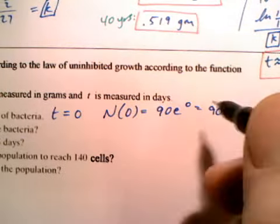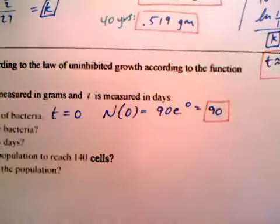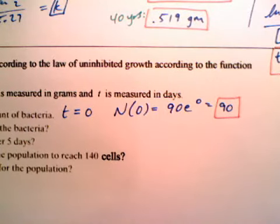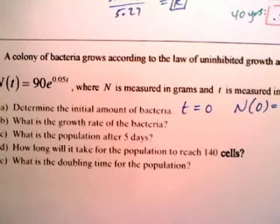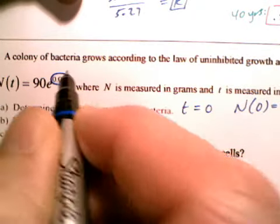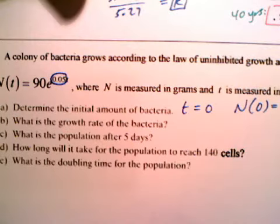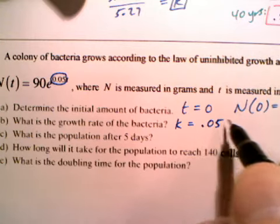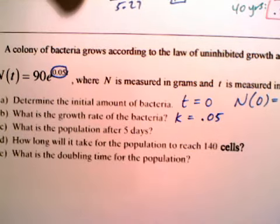So when T equals zero, we get n sub zero. And that is 90 times e to the zero, which is 90 times 1. What is the growth rate of the bacteria? You don't have to do any work for that. The growth rate is always going to be the K. K equals .05. Remember, when K is positive, the population continues to increase.